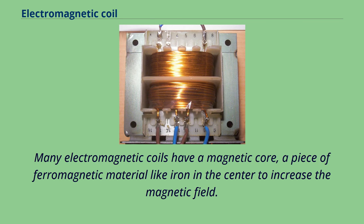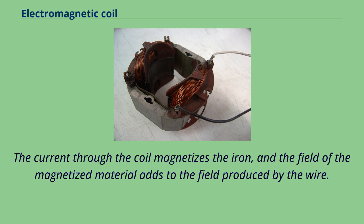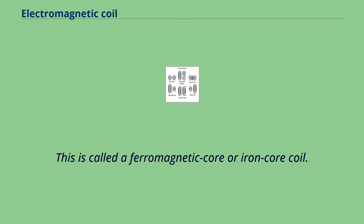Many electromagnetic coils have a magnetic core, a piece of ferromagnetic material like iron in the center to increase the magnetic field. The current through the coil magnetizes the iron, and the field of the magnetized material adds to the field produced by the wire. This is called a ferromagnetic core or iron core coil.